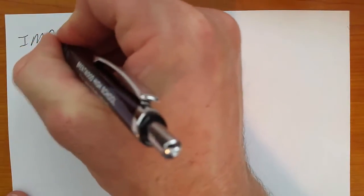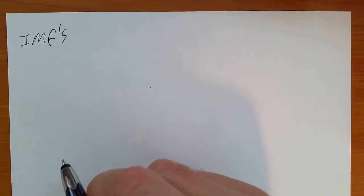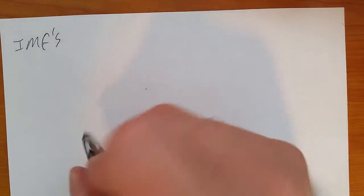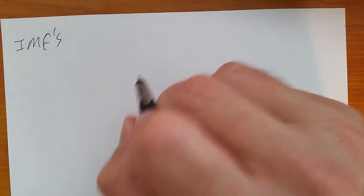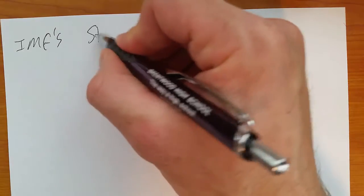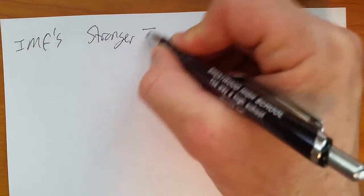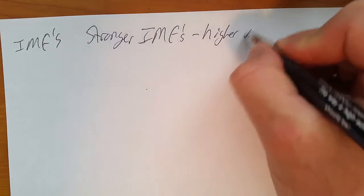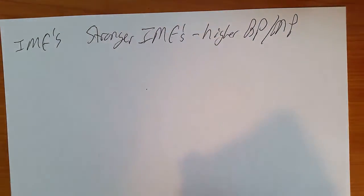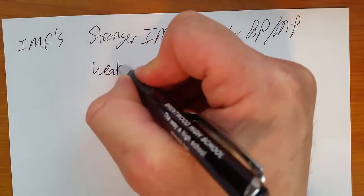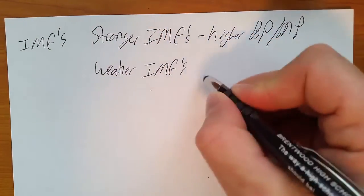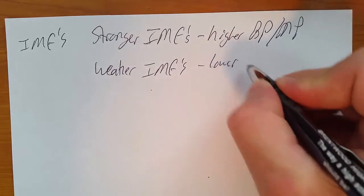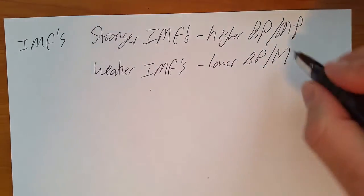These intermolecular forces affect things like melting point and boiling point and hardness. So, the stronger intermolecular forces, the higher boiling point and melting point. The weaker the intermolecular forces, the lower the boiling point and melting point.